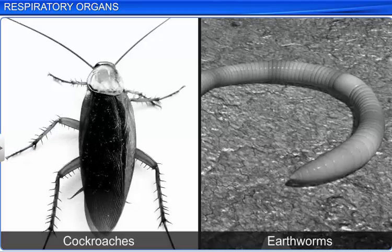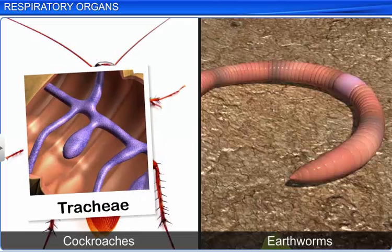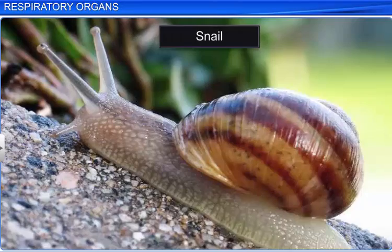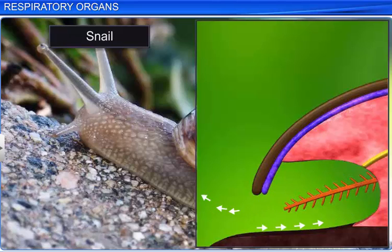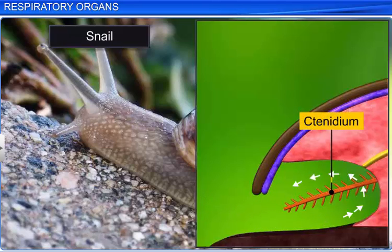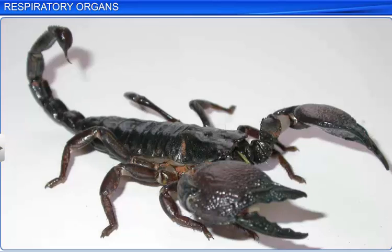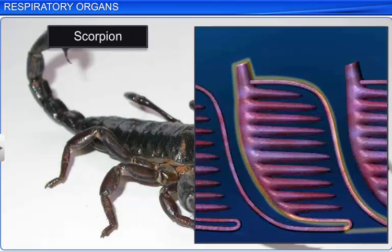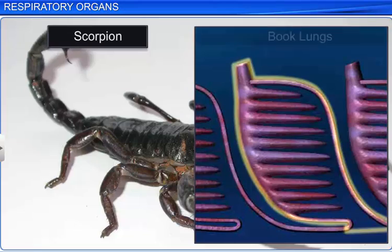In insects such as cockroaches and earthworms, tubular extensions of the body wall called tracheae and moist skin help transport atmospheric air throughout the body. Most mollusks use special vascularized structures called ctenidia for gaseous exchange. Some arthropods such as spiders and scorpions use many thin folds of membrane resembling the pages of a book for respiration. These are called book lungs.